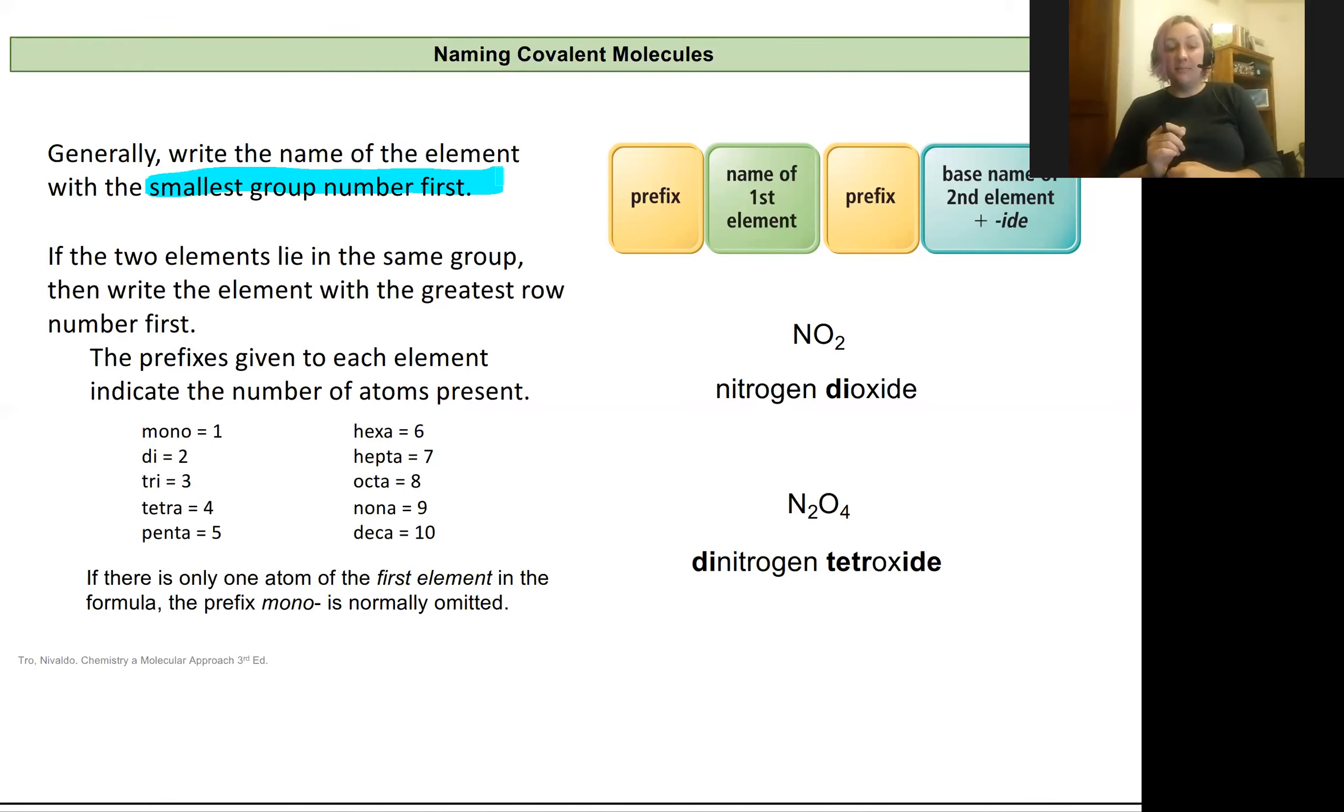Now if they're in the same group, then we would write the element that has the greatest row number first. So if we were looking at fluorine and chlorine somehow bonding together, we would have the chlorine written first because it has a larger atomic number or it's in the greatest row number. It'd be in row three rather than row two. That helps us figure out which one to do first.